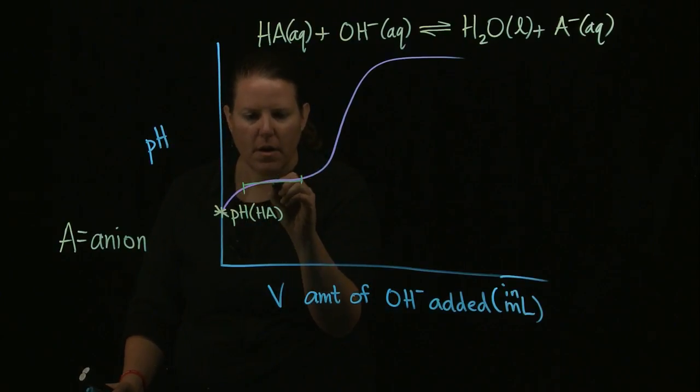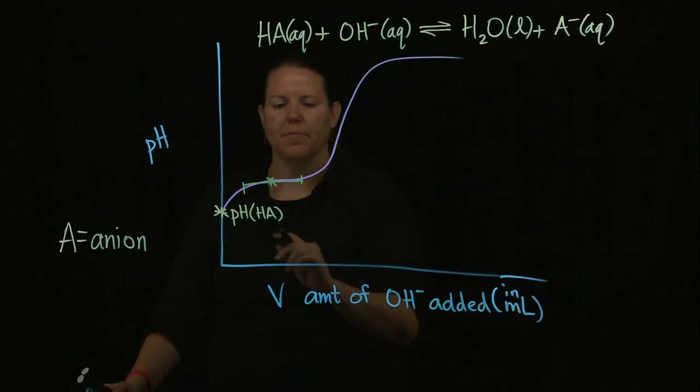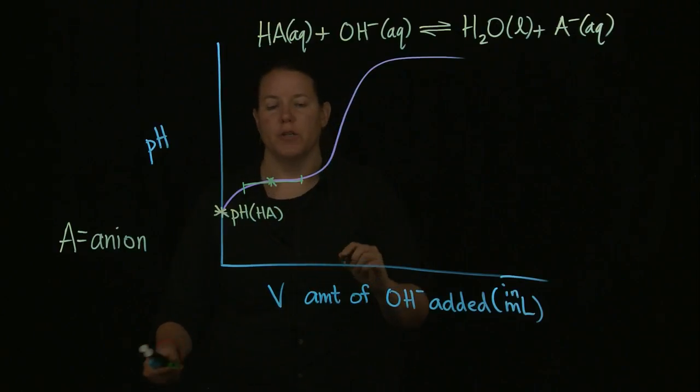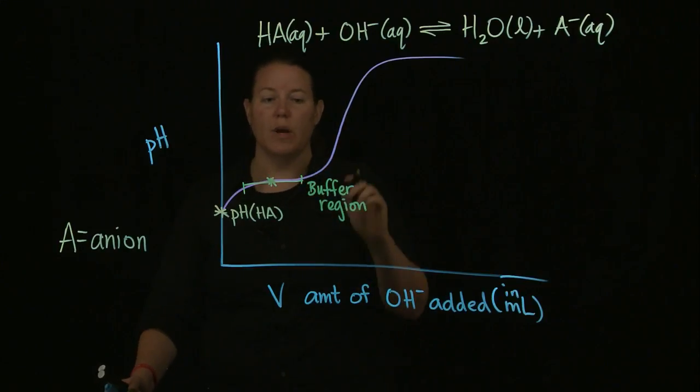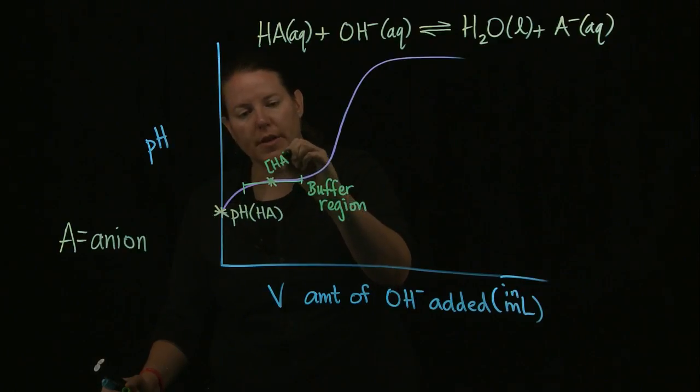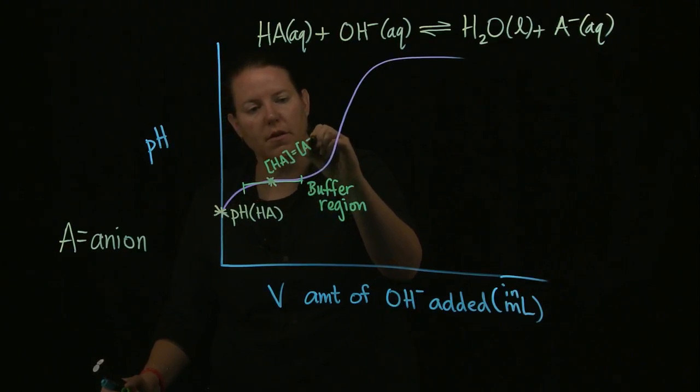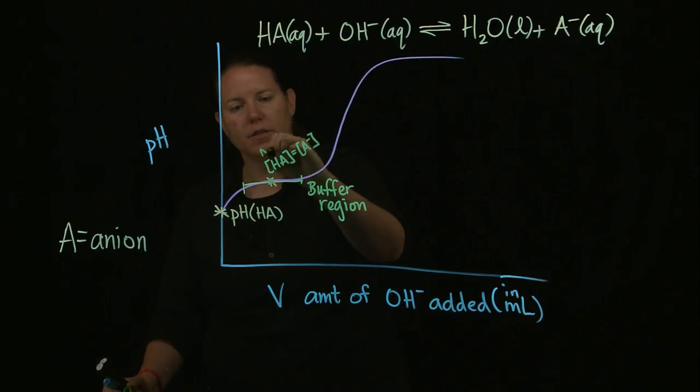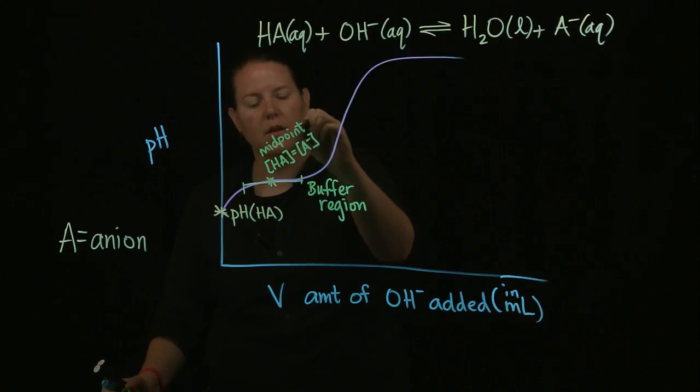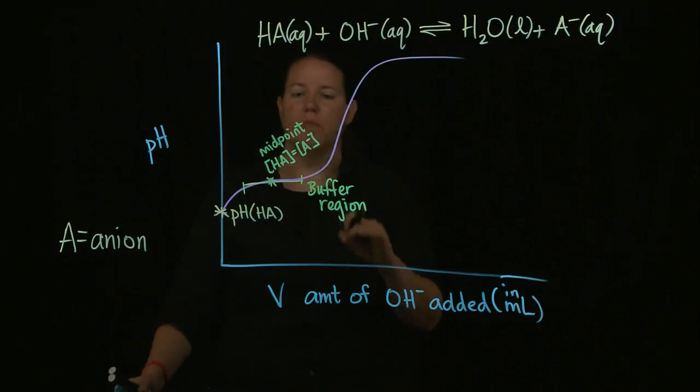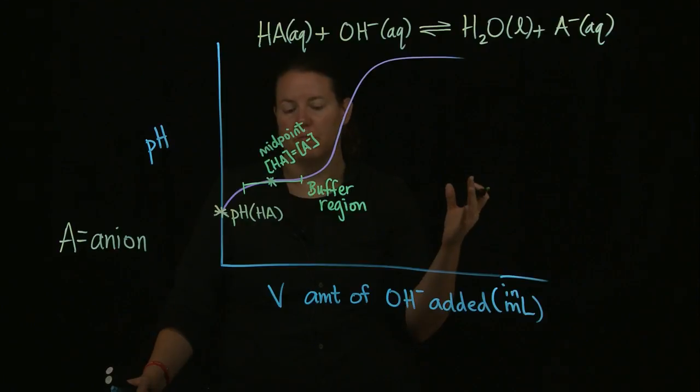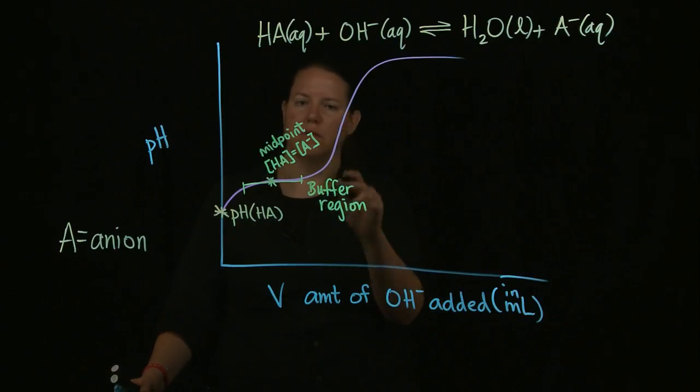We're going to eyeball it a little bit, but we're going to kind of say, okay, there's at least one part of the flat part. There's one part of the flat part. Let's draw a line in between those two, and this is just eyeballing it. And the midpoint of that line. The flat region here is what we call the buffer region. And the midpoint of the buffer region is where the concentration of HA equals the concentration of A minus. So this is the midpoint.